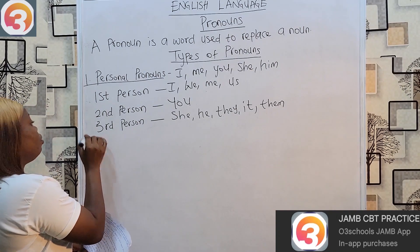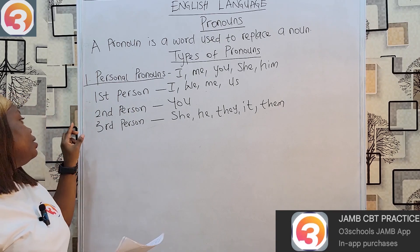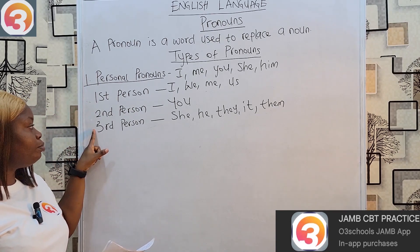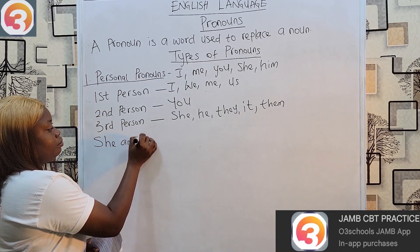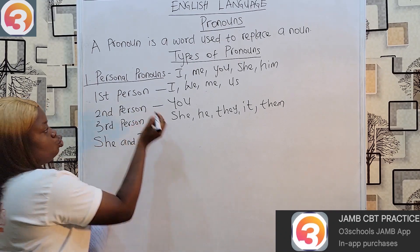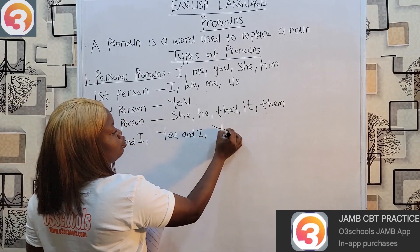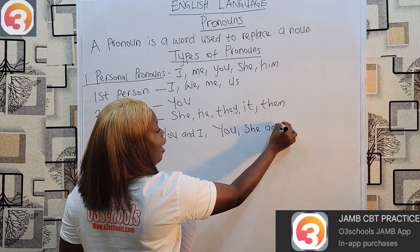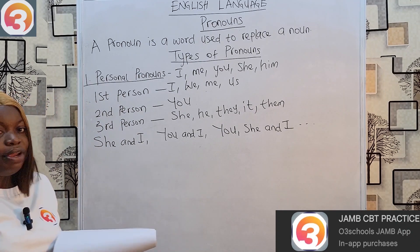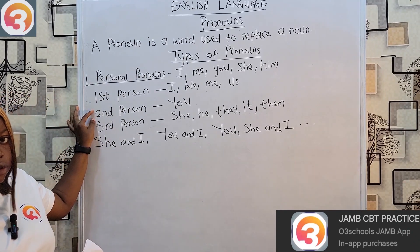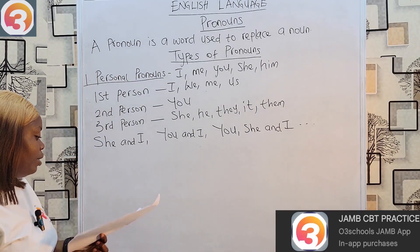Take note: when you have all three persons in sentences, second person always comes first, then third person, before first person. So you can have 'she and I,' 'you and I.' If you have all three, it becomes 'you, she, and I.' That is how they are arranged in sentences — second person first, third person before first person.